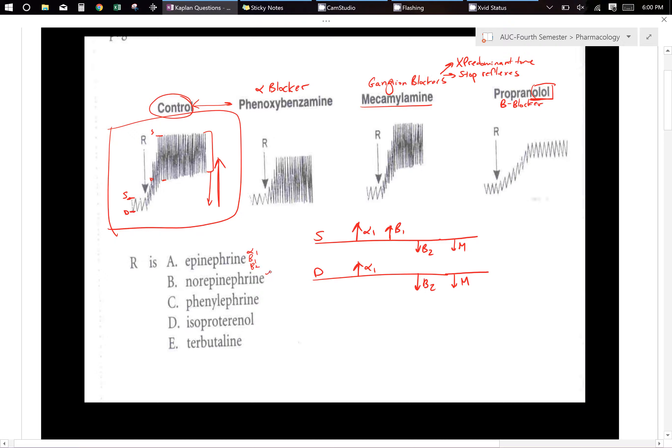Phenylephrine is an alpha 1 by itself. Isopraterenol is going to be beta 1 and beta 2. These are all agonists. And terbutaline is a beta 2.